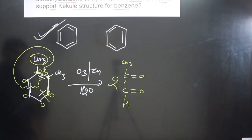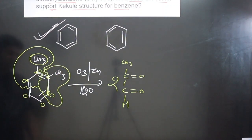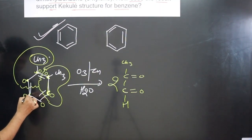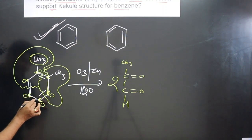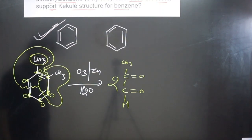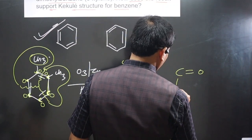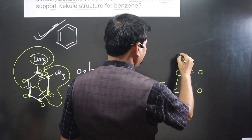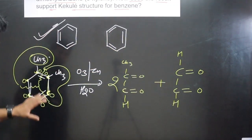These two molecules are segregated. The remaining portion has two carbons, each attached to oxygen via a double bond, and each carbon forms three bonds meaning each has one hydrogen. So we can write: C=O and C=O, each carbon attached to hydrogen. These are the products obtained from ozonolysis of the first Kekulé structure.